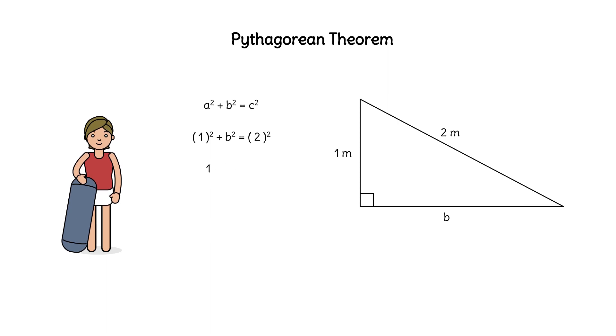One squared is one. Two squared is four. Subtracting one from both sides gives us b squared equals three. How do we solve for b? Take the root of three, and we have b is approximately 1.73 meters.